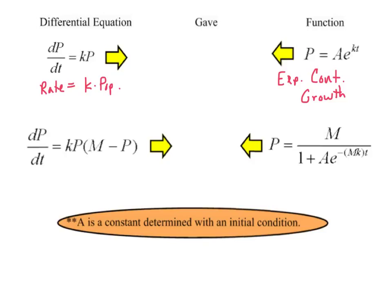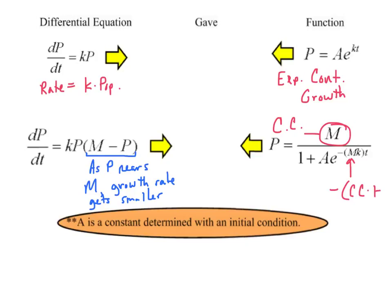This other new one, this represents the fact that as P nears M, which is the carrying capacity, the growth rate gets smaller. And what that yields is this formula over here. M is the carrying capacity. You see the negative MKt, so that's negative. And then carrying capacity multiplied by that K, that coefficient that they'd give us.